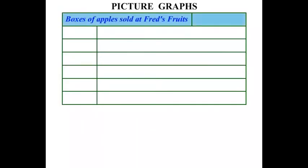In this lesson we're doing some work on picture graphs. In this graph we have boxes of apples sold at Fred's Fruits. We have one little thing here — one apple is equal to 20 boxes. This is known as a key.